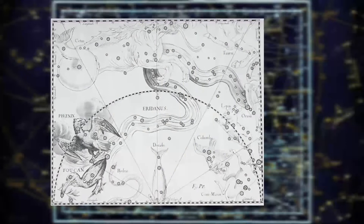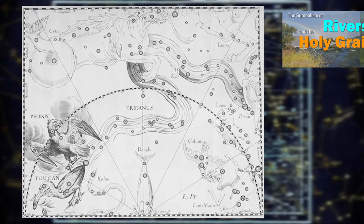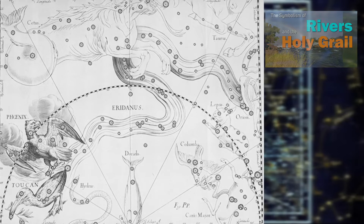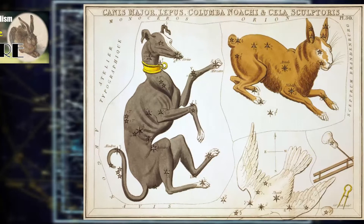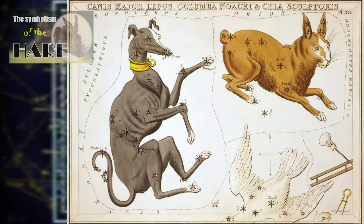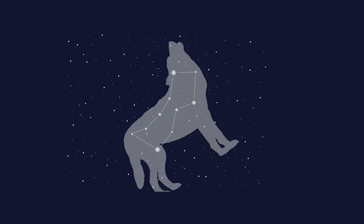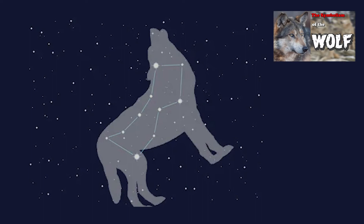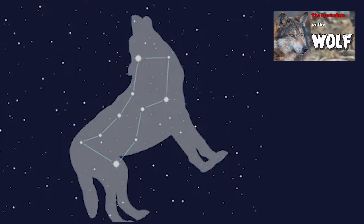Eridanus, a River. We have a video in the playlist for this constellation, given the more general title The Symbolism of Rivers and Streams. Lepus, the Hare. We have a video in the playlist entitled The Symbolism of the Hare. Lupus, the Wolf. We have a video in the playlist for this constellation, but this video shows how an originally positive shamanic symbol could be redrawn to be negative. We have given it the more general title The Symbolism of the Wolf.